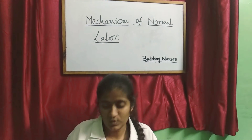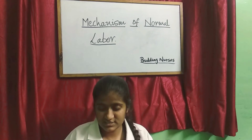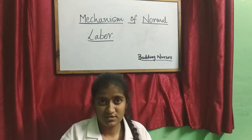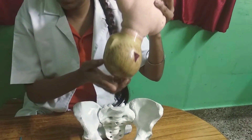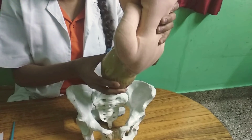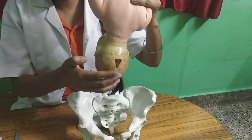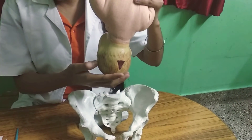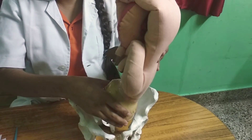In normal labor, the lie is longitudinal, presentation is cephalic, and the presenting part is the vertex. The attitude is good flexion, the denominator is the occiput, and the position is left occipito-anterior.